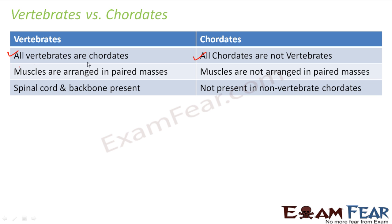In vertebrates, muscles are arranged in paired masses. In chordates, muscles are not necessarily arranged in paired masses, because in vertebrates we have the backbone or spinal cord from which all muscles are arranged in paired masses. Spinal cord and backbone are present in vertebrates but not in non-vertebrate chordates, since chordates also includes protochordates, and in protochordates we do not have a dorsal nerve cord — therefore no spinal cord or backbone. This is how we can distinguish between vertebrates and chordates.